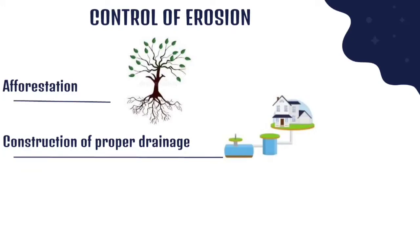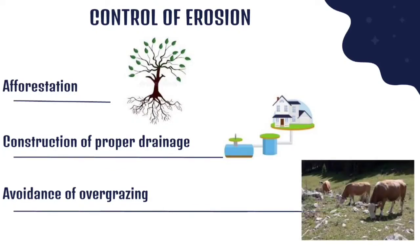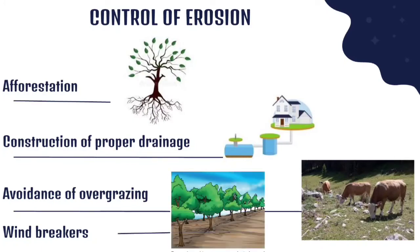Another one is avoidance of overgrazing. We should not allow our animals to just keep grazing on one spot. We should be taking them to different locations so that it won't cause erosion. And the last one here is windbreakers. When we plant trees like this, it helps to reduce the wind. That way, wind can't cause erosion where we plant lots and lots of trees.